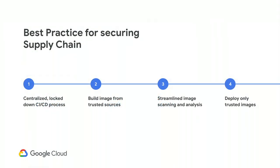So what to do? We have a few best practices. First, you should have a centralized lockdown CI-CD process as a single choke point for applying changes to your production environment. Second, you should build images from only trusted sources. Third, you should have streamlined scanning and analysis for your images. And last, explicitly verify each image you deploy to your production environment and have that baked in as part of your CI-CD process.